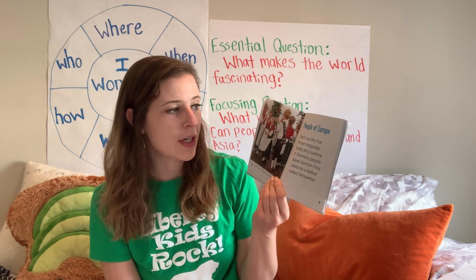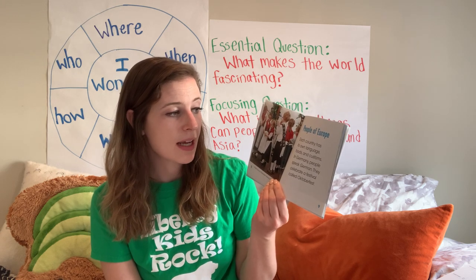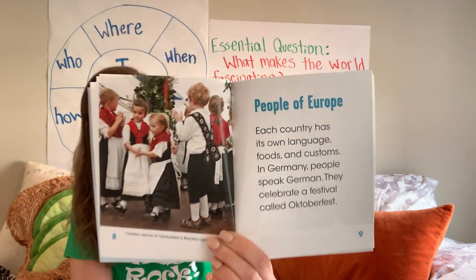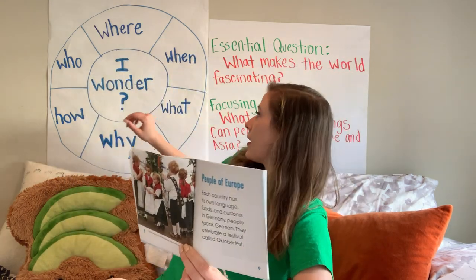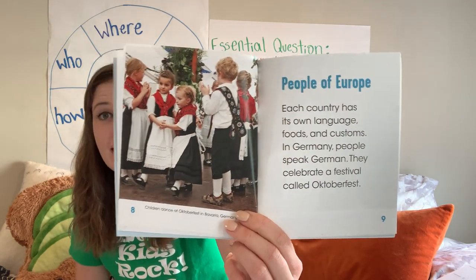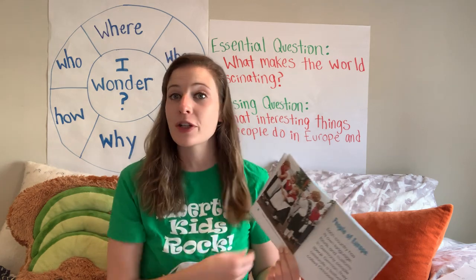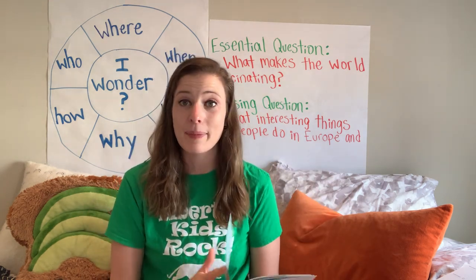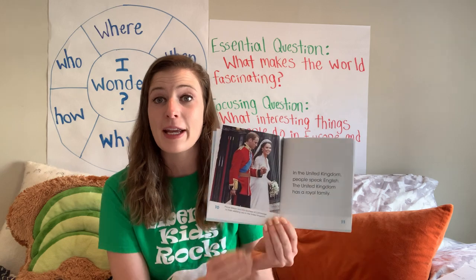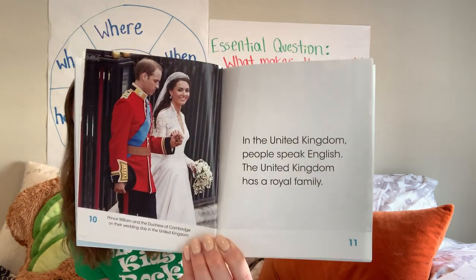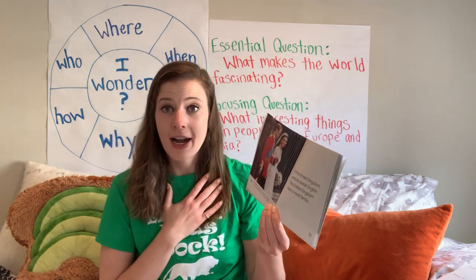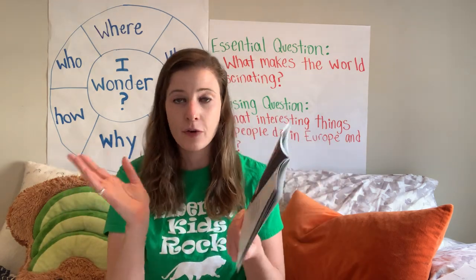People of Europe: each country has its own language, foods, and customs. In Germany, people speak German. They celebrate a festival called Oktoberfest. You might be wondering what is Oktoberfest and what they are celebrating, or why they are all wearing the same outfit. In the United Kingdom, people speak English. The United Kingdom has a royal family — a king and a queen. We do not have a queen; we have a president, so we have different forms of government.